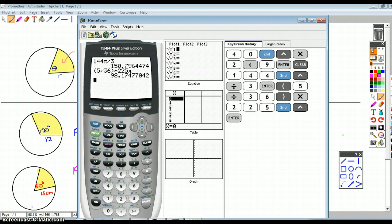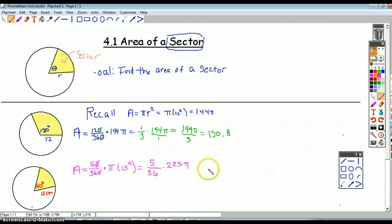That's 98.175. Let's be careful with units - we're measuring area. The radius was given in centimeters, so this is centimeters squared.